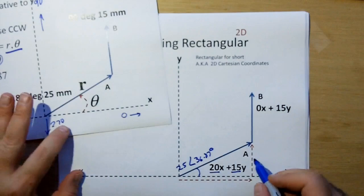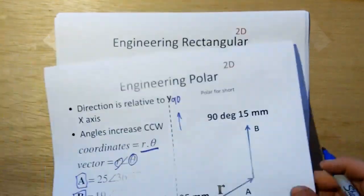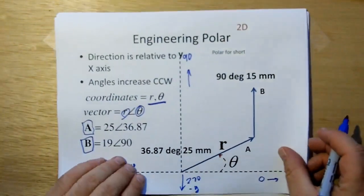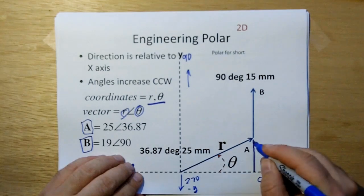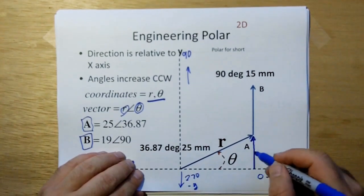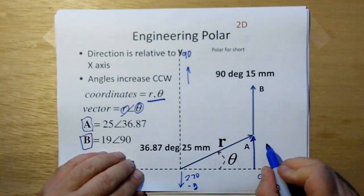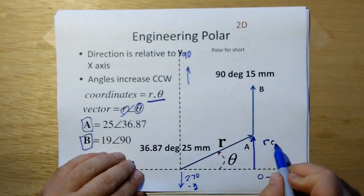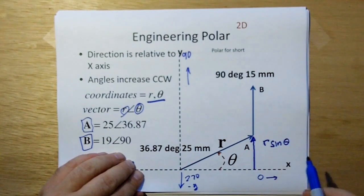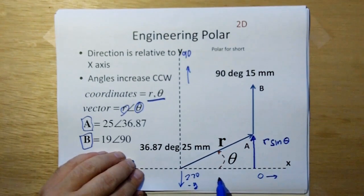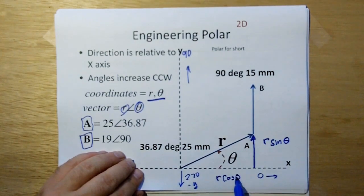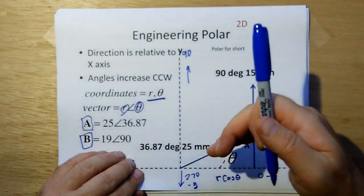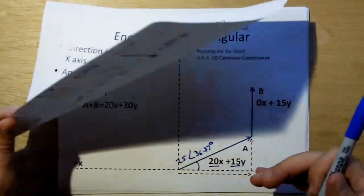In order to go from polar to rectangular, this is where you need to know your sine and cosine. The distance in the y-direction would be R times the sine of theta, and the distance in the x-direction would be R cosine theta. That's how we convert from polar to rectangular.